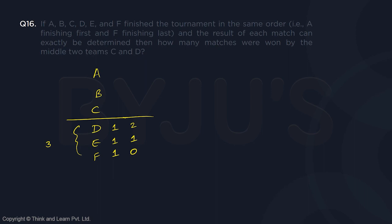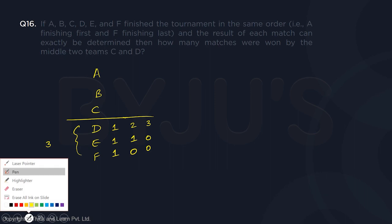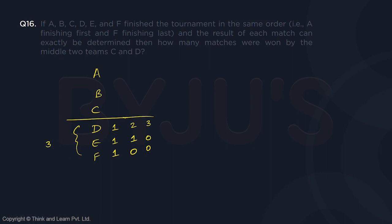Remember 3, 0, 0 cannot be possible because D is playing only 2 matches with E and F, so it can get maximum 2 points. So there are 3 points total but D can get maximum 2. So E can get 1 and F gets 0, or D gets 1, E gets 1, F gets 1.